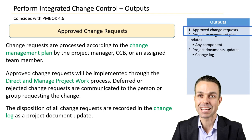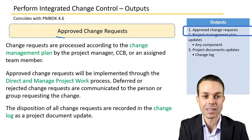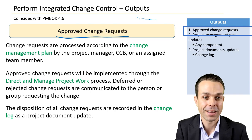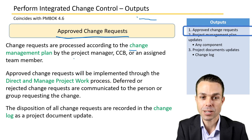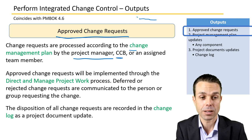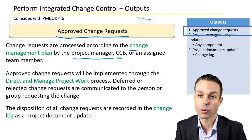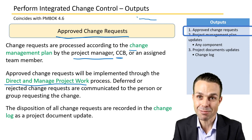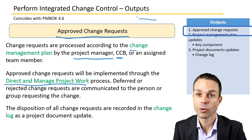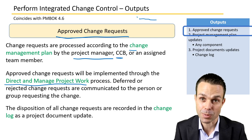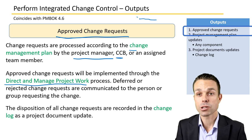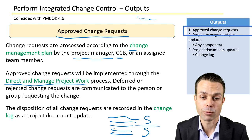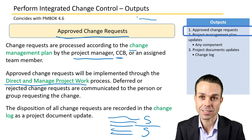Looking at the outputs of Perform Integrated Change Control: the main output is approved change requests. The change request came in, went through the process, and now comes out as an approved change request. Change requests are processed according to the change management plan by the project manager, the change control board, or an assigned team member. Approved change requests will be implemented through the direct and manage project work process. Deferred or rejected change requests are communicated back to the person or group requesting that change — they still need to know — and the disposition of all change requests is recorded in the change log.